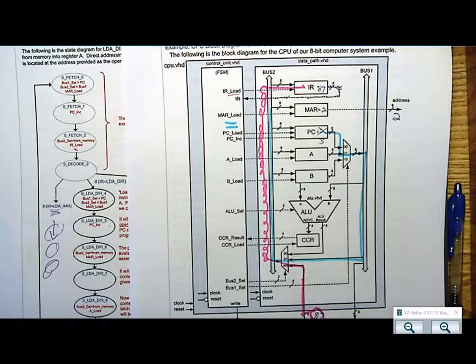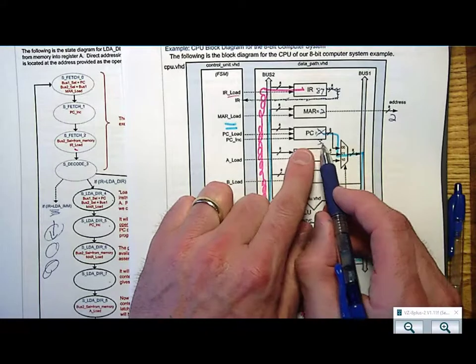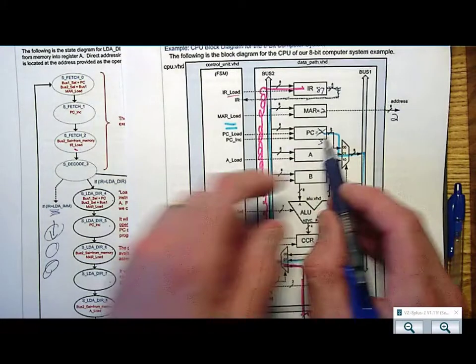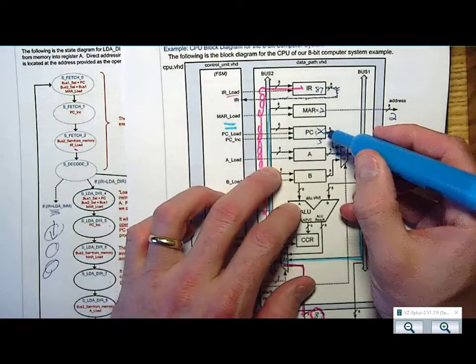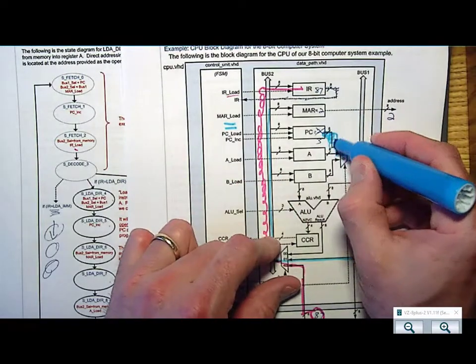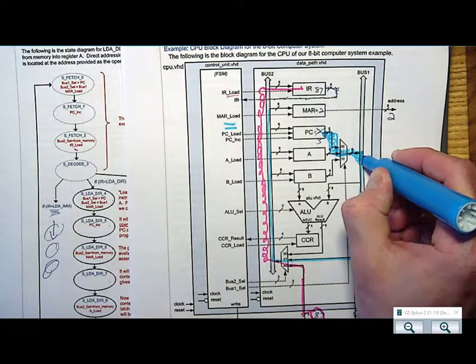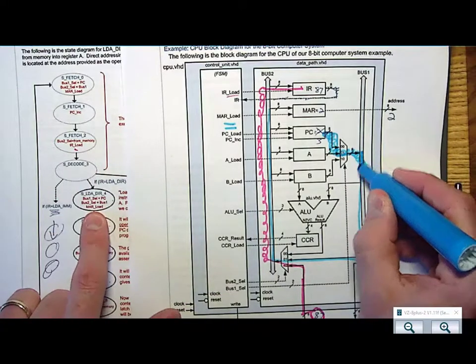So I come along and say, okay, if I want to get the program counter onto the memory address register, I have to do that same example where I tell this multiplexer to put the program counter on bus 1. So I change the bus 1 select to program counter.